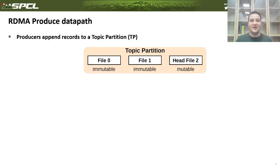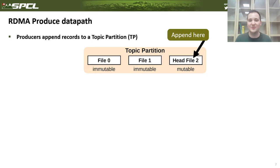First, I'd like to talk about the RDMA produce data path. Producers would write records to queues, which are called topic partitions in Apache Kafka. A topic partition is logically a long log, but physically it consists of multiple files where a file can be a maximum of one gigabyte by default. Each record would be written to the last file, and when it becomes full, a new file is created for new records. We propose to use RDMA to directly write records to memory-mapped files at the virtual address offered by the mmap call.